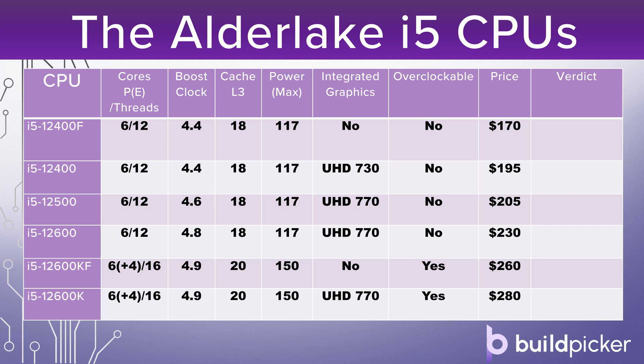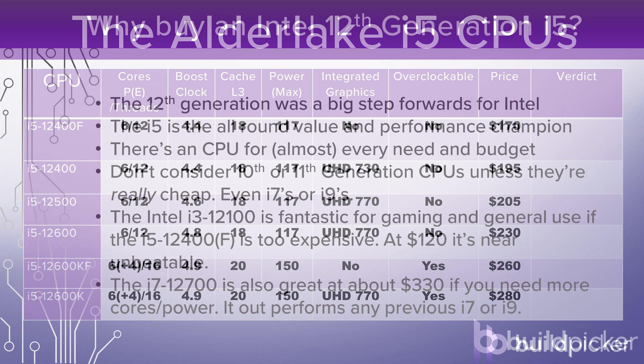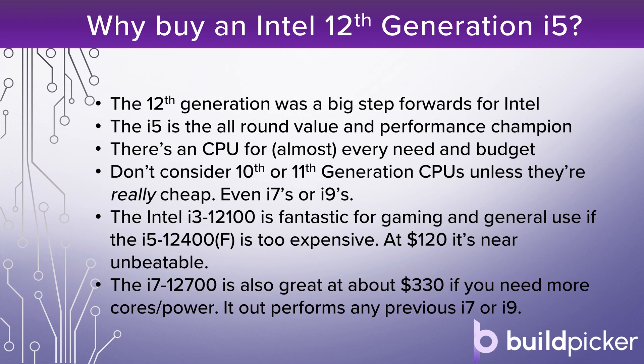I'll start by explaining a few of the points you'll want to consider so they're all on the same footing in terms of information. Then the rest of what we say will make sense as we pick between the CPUs. You should really only consider the 12th generation of the Intel CPUs at this point. They took a big step forward from the 10th and 11th generations, and realistically there's a CPU here for every price point.